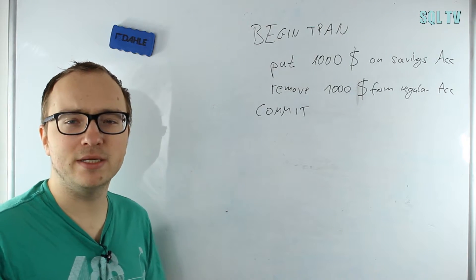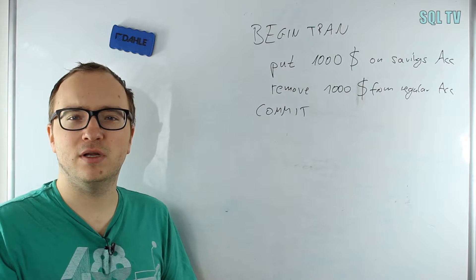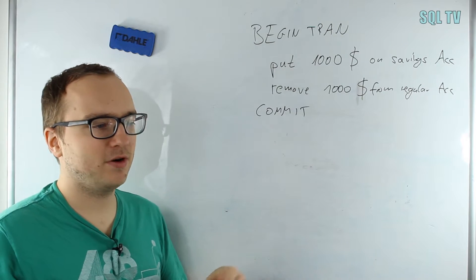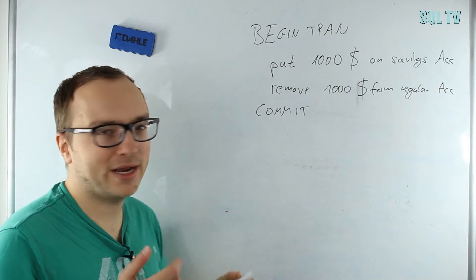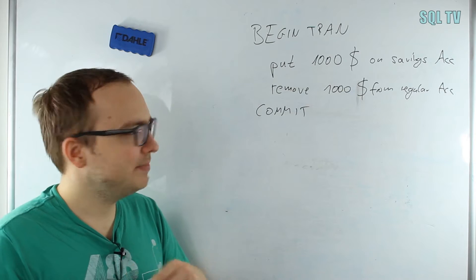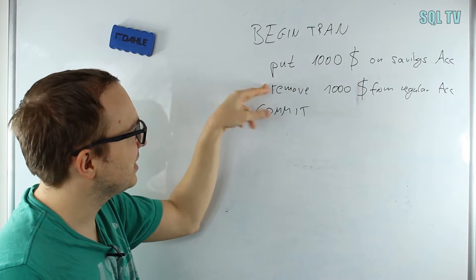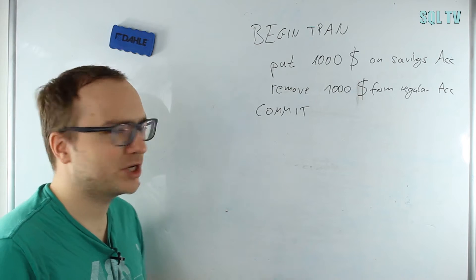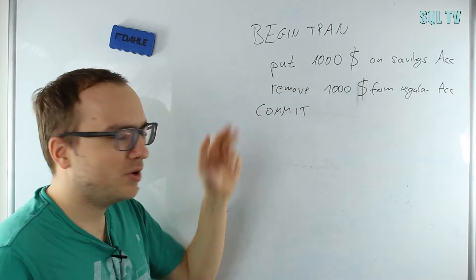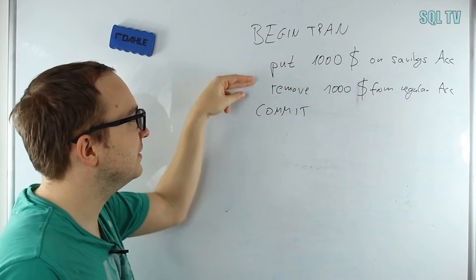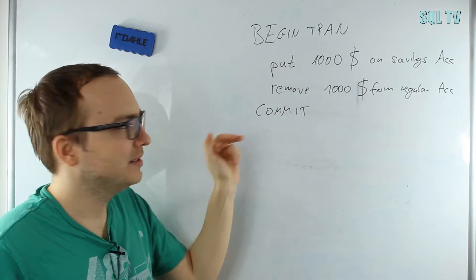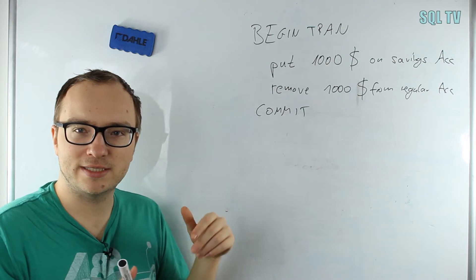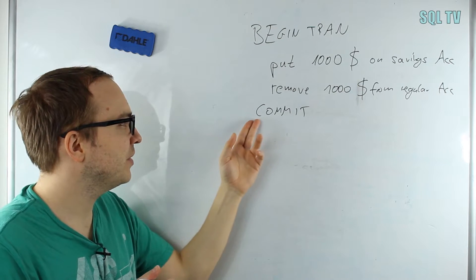The third property is Durability. This means that whenever a power failure or crash on a server happens, my data is not lost. If I execute the transaction and I'm done putting $1,000 on the savings account and my computer crashes or the server crashes, I can be sure whenever the database is up and running again that this will never have happened—this would be rolled back when the server comes up again because it was not committed when the crash happened.